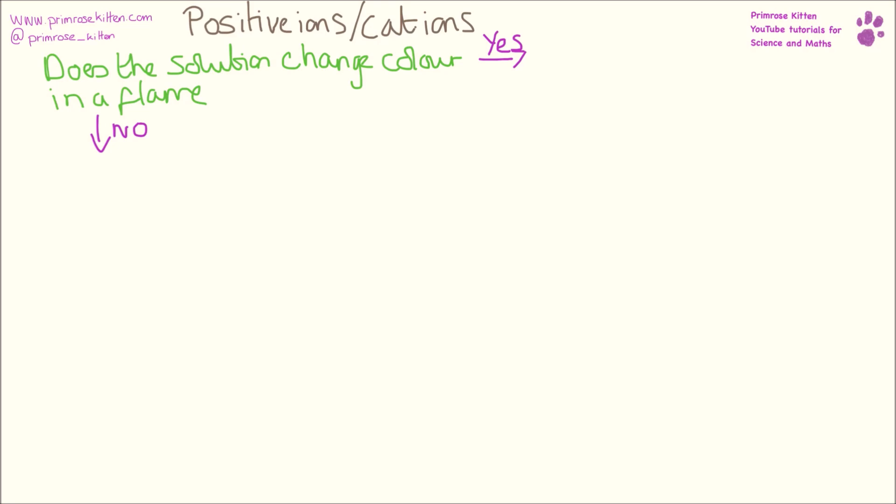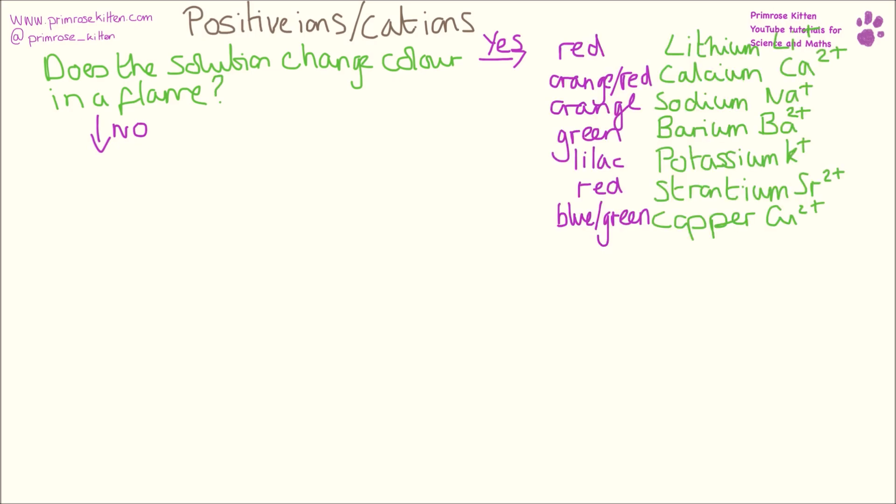Now we're going to look at positive ions. The first thing we're going to do is a flame test. Does the solution change colour in a flame? Red is lithium. Orange-red is calcium. Orange is sodium. Green — although I never think a person looks green — is barium. Lilac is potassium. Red is strontium. And a nice blue-green is copper.